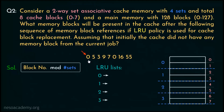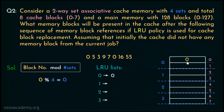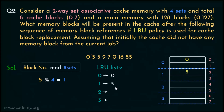For block placement in set associative mapping, we take the main memory block number and perform a modulus operation with the number of sets. For block request 0: 0 mod 4 = 0, so block 0 is placed in set 0 — let's say in line number 0 — and set 0's LRU list is updated to include block 0. For block request 5: 5 mod 4 = 1, so block 5 is placed in set 1 — in line number 2 — and set 1's LRU list includes block 5.